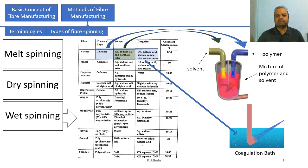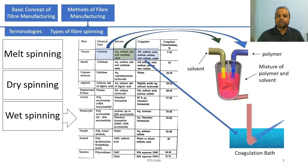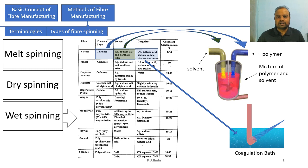Examples of fibers that use wet spinning methods are viscose, modal, cupramonium, alginate, certain regenerated fibers, polyacrylonitrile, polyvinyl alcohol, aramid fibers, and spandex. These are the fibers that use wet spinning technology.